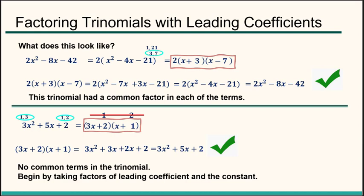So that means 3x plus 2 times x plus 1 is our answer. No common terms in this trinomial, so what I need to do is take factors of the leading coefficient, which is the 3, and then I need to take factors of the constant, which is the 2.